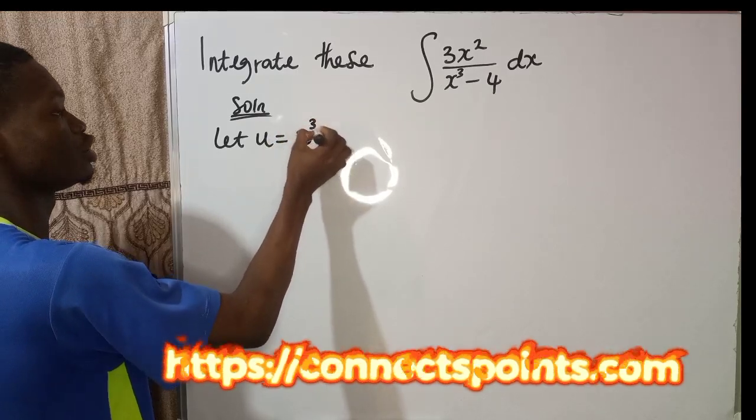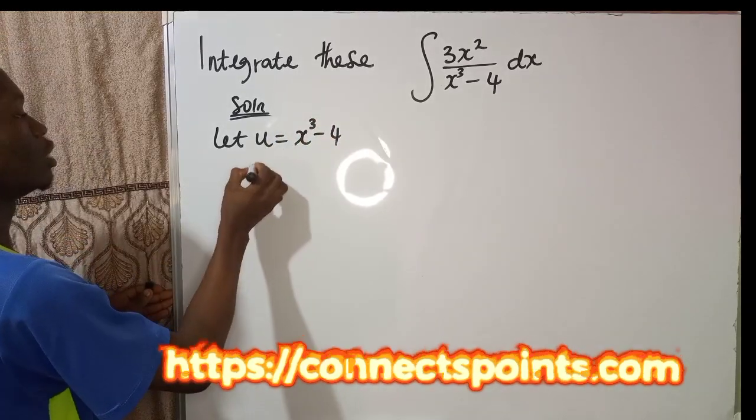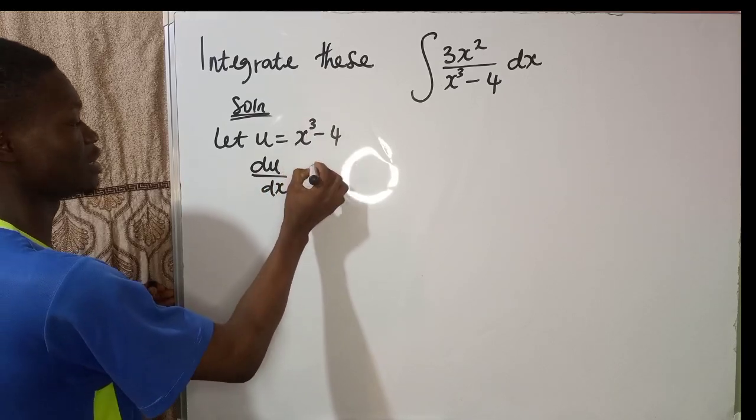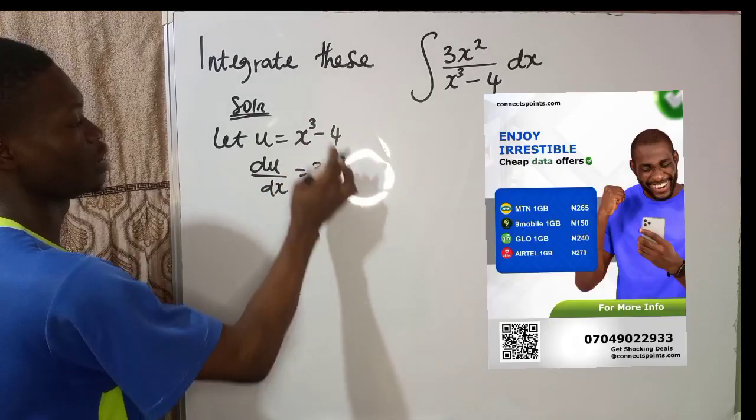Let u equals x² - 4. Then du over dx, presenting this will be 3x times x. So you can cross-multiply to make dx the subject.